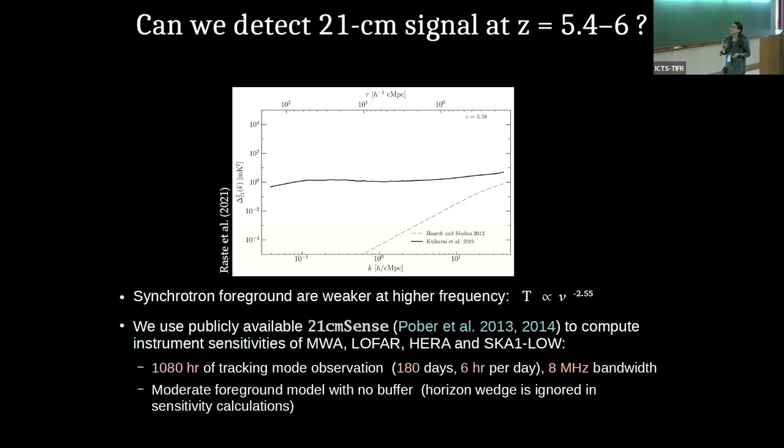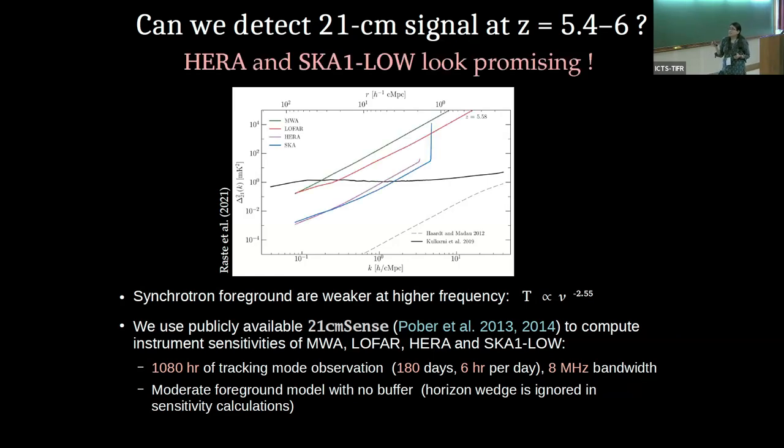Can we detect it? To calculate its prospects of detections, we have calculated the sensitivity of four instruments, interferometric instruments: MWA, LOFAR, HERA and SKA-1-LO for 1080 hours of observations. And since the foregrounds are weaker at higher frequency, which corresponds to lower redshifts, we have assumed that these foregrounds are going to be limited within the wedge region. And we have calculated the sensitivity for 1000 hours of observations. And what we see is that these sensitivities for HERA, which is currently being built, and for SKA, which is upcoming—HERA has already started giving results also—for them, these two sensitivities seem very promising that we should be able to detect the signals in near future.